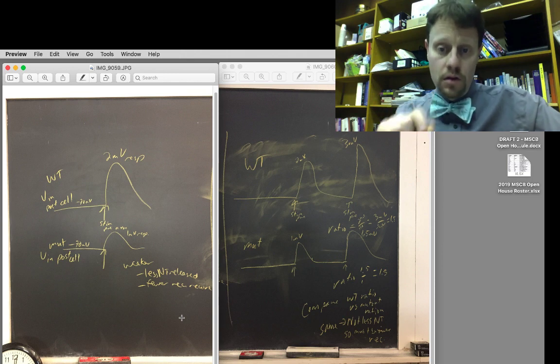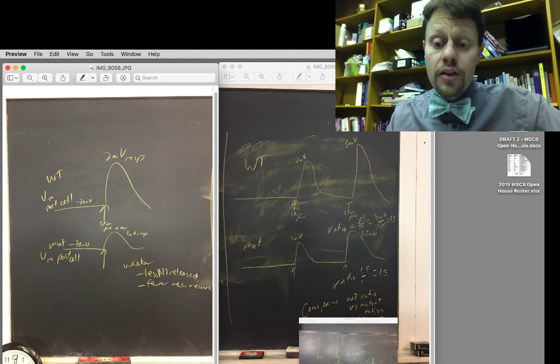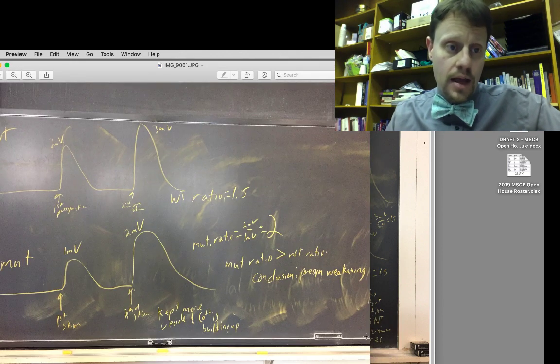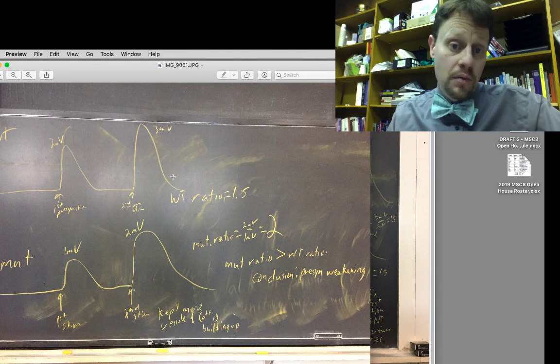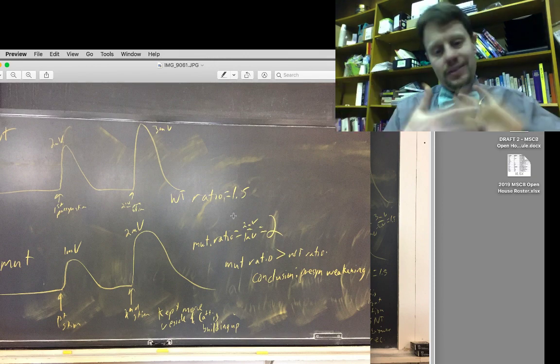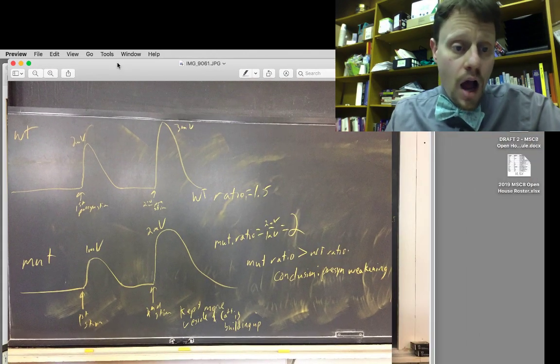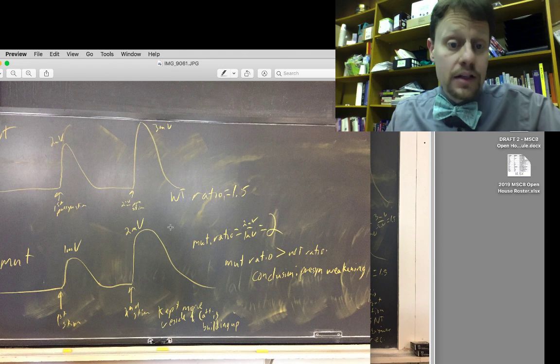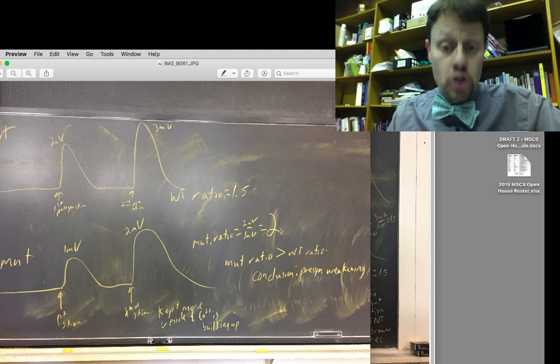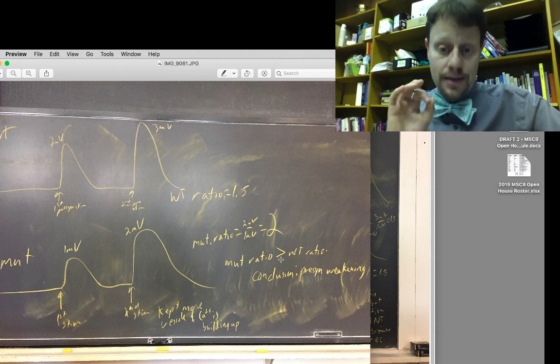The other possible result we could have gotten: again, our wild type is a two millivolt response, then our second pulse gives us a three millivolt response, so our wild type ratio is still 1.5. But the other possibility—this is counterfactual data—our other possibility is that the mutant has a one millivolt response to the first pulse, we already knew that was going to happen, but now with the second pulse we get a two millivolt response. The ratio in our mutant now, instead of 1.5, is 2. The mutant ratio is not the same as the wild type; it's greater than the wild type.